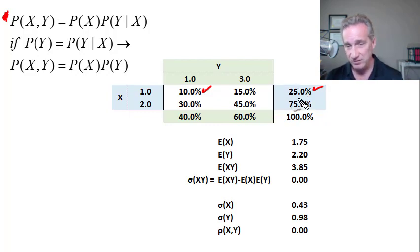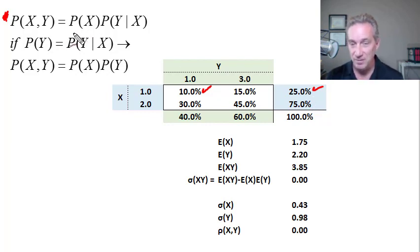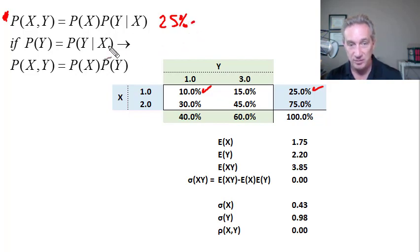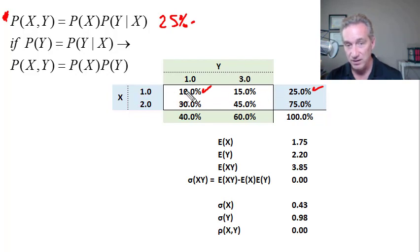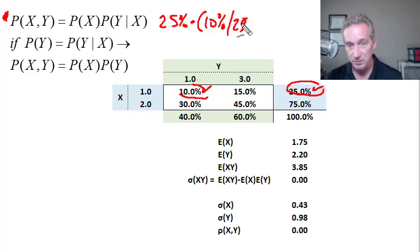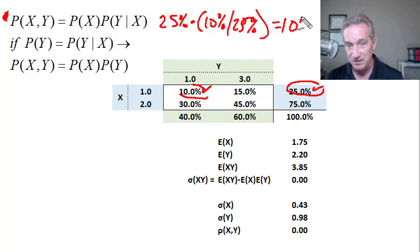A helpful memory mnemonic: since this value is outside in the margins, it's also called a marginal probability. So 25% is the marginal probability that X equals one. We multiply that by the conditional probability, which we can't read directly off the table — we have to do the division. We want the conditional probability that Y equals one given X equals one: that's 10% divided by 25%, which is 40%. By design, the 25% cancels and we're back to the 10%.